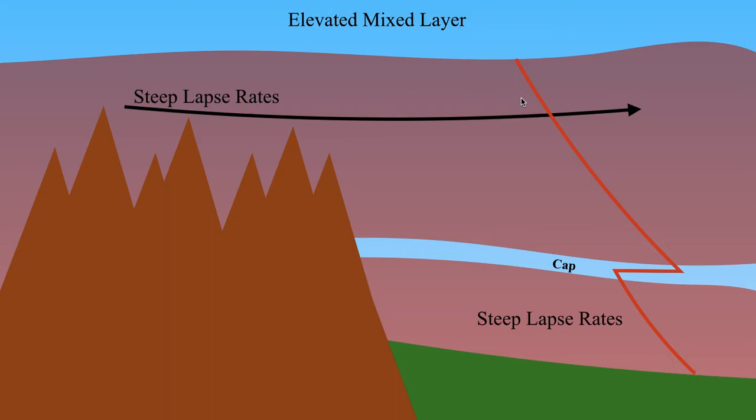If you've got nice thunderstorm updrafts in the region of very steep lapse rates, again 8 to 9 degrees C per kilometer under an ideal circumstance, those updrafts are going to be very explosive. They're going to go up rapidly. And of course, as we've seen, those strong mid-level lapse rates are a source of potentially a significant hail event. Those supercell thunderstorms will be producing some very massive hail.